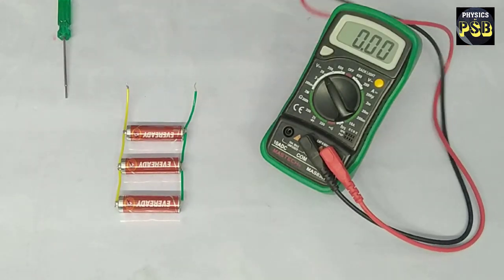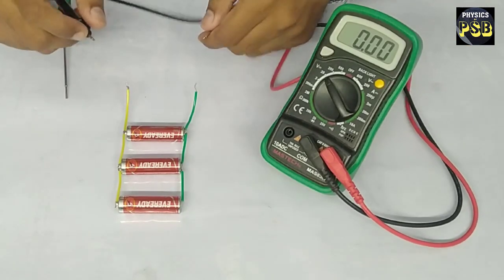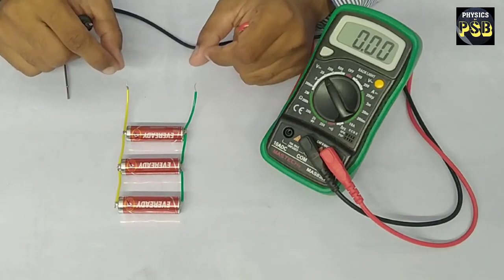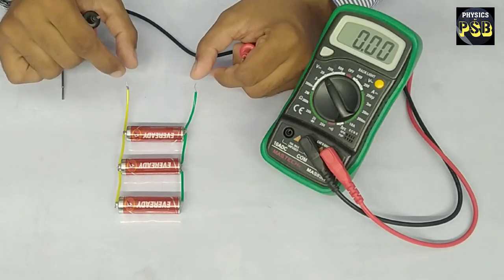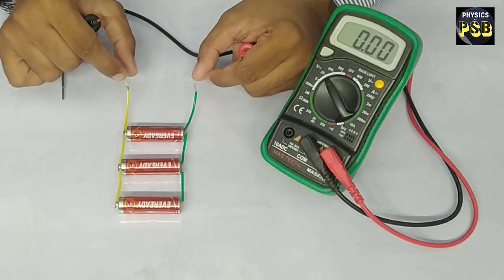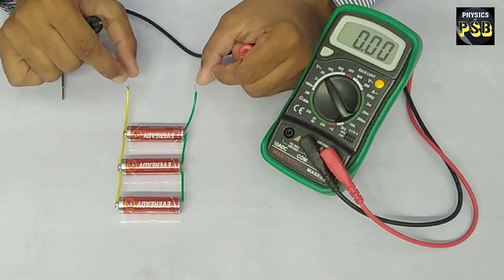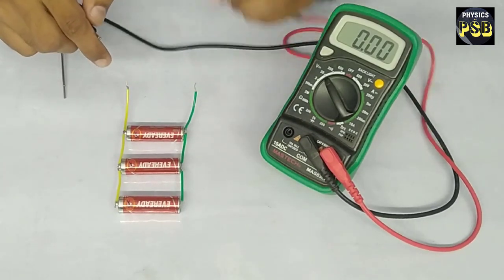EMF means the potential difference across two points of a battery or cell when the circuit is open.